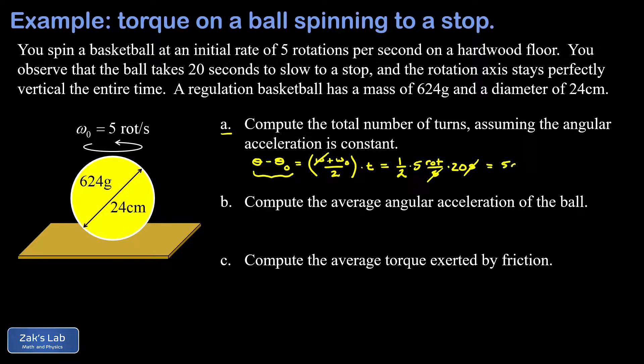For the second question we're asked for the average angular acceleration of the ball. It's understood implicitly there that we should be giving SI units for this—it should come out in radians per second squared—and this means we want to get that initial rotational velocity converted into radians per second.